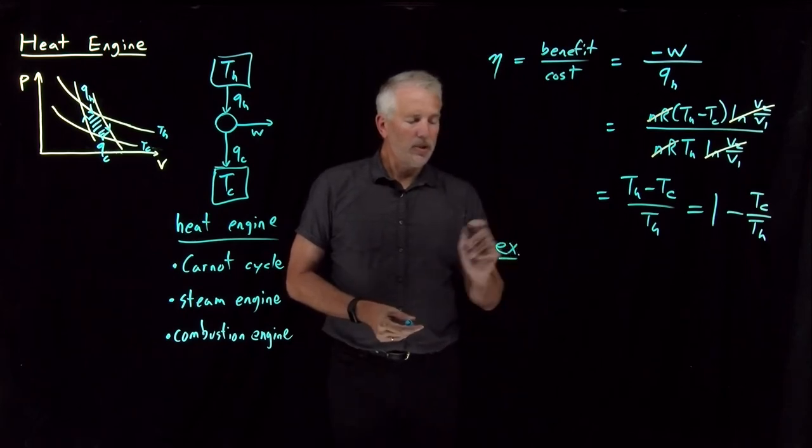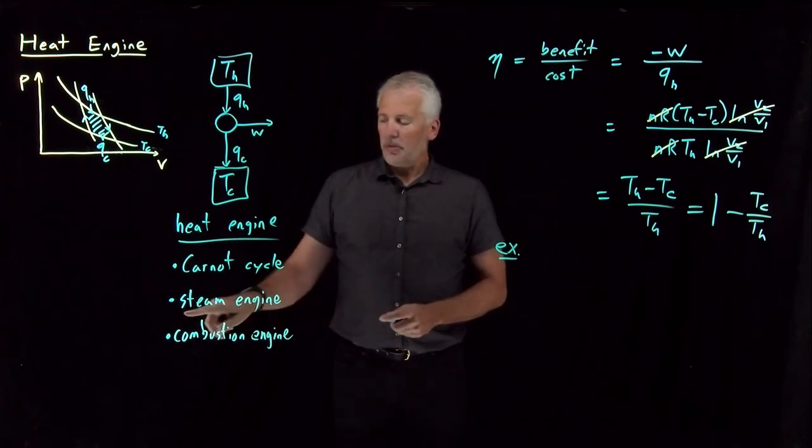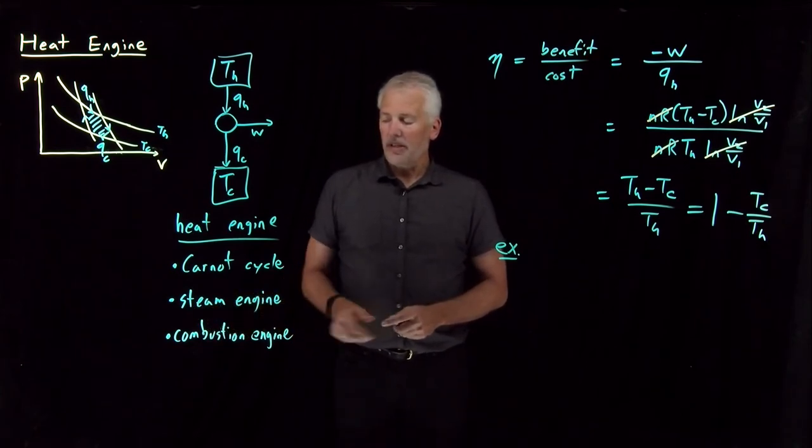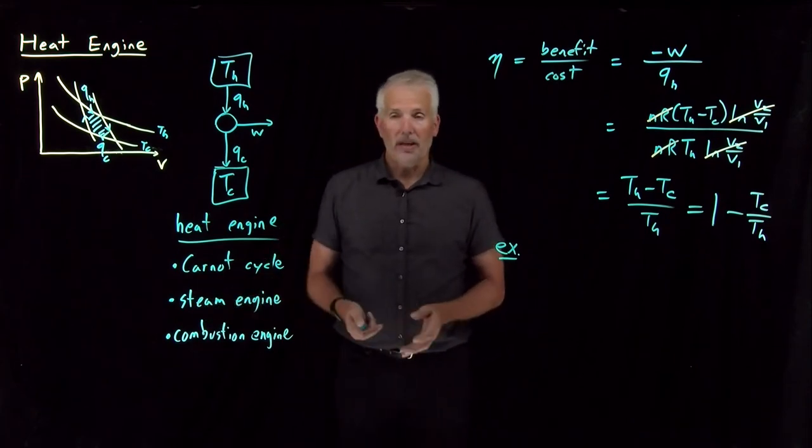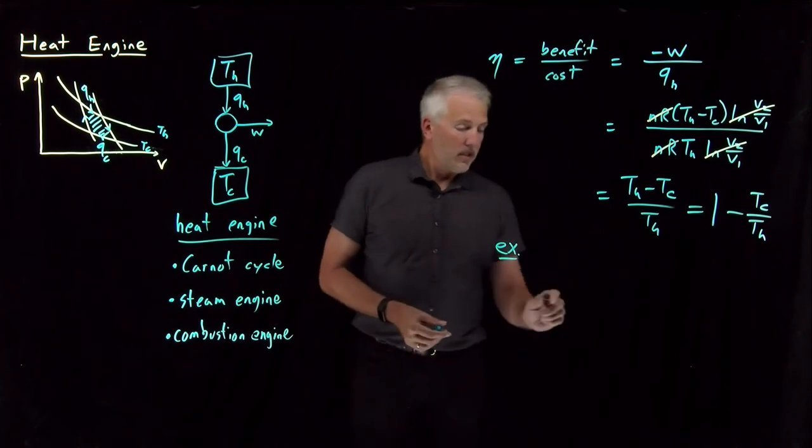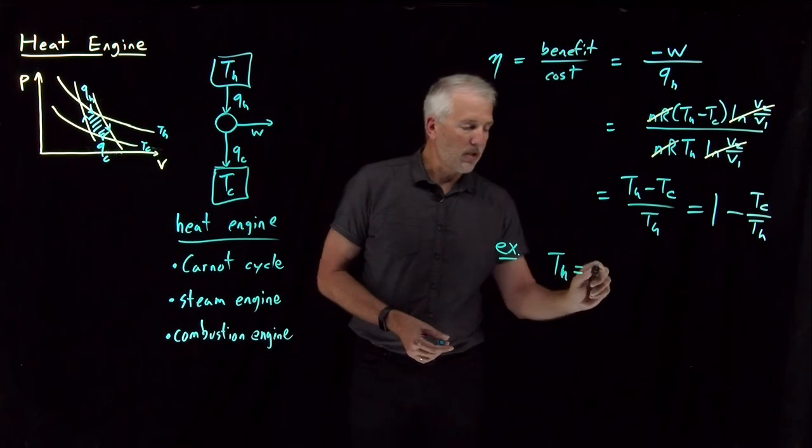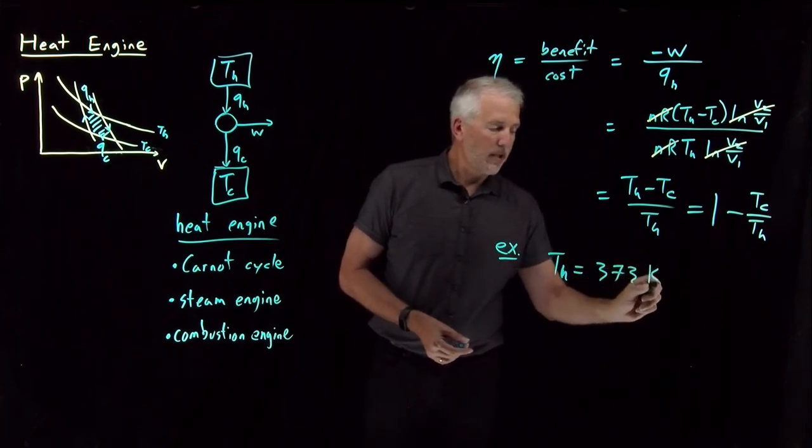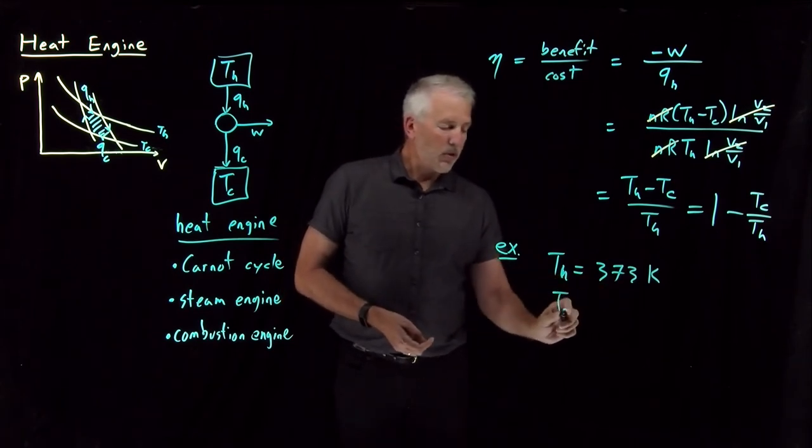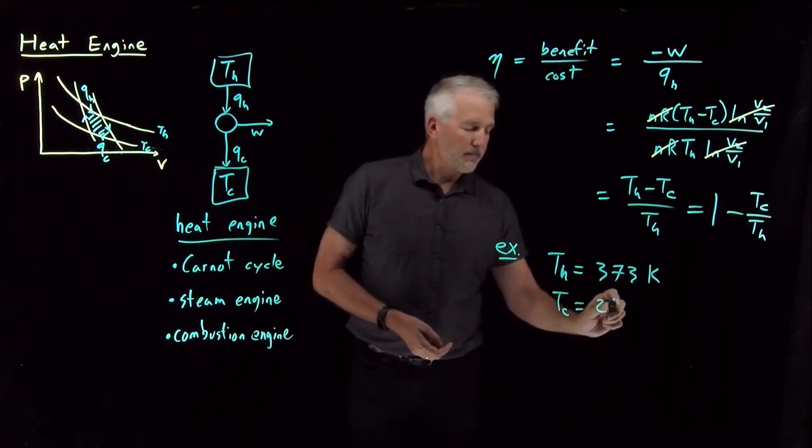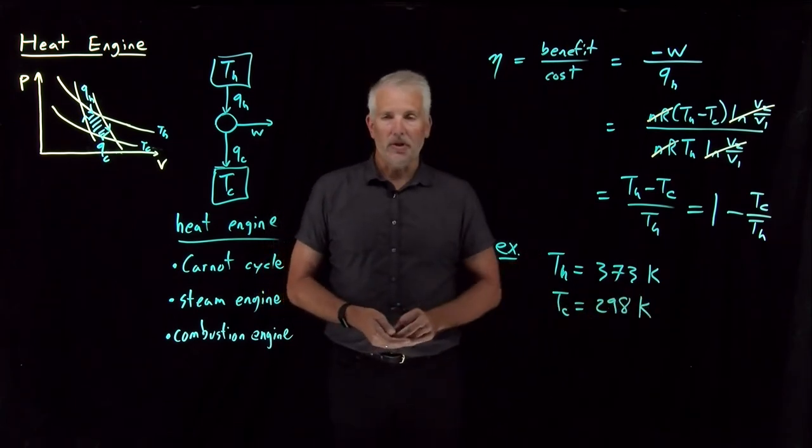That will make a little more sense probably if we use a specific example. So let's say, just because the numbers are fairly easy, let's take the case of a steam engine. Let's say we're running a steam engine, so we're getting our work out of boiling water. So in a steam engine, the hot temperature is the temperature of boiling water, 100 degrees Celsius, or 373 Kelvin, if it's not a very high pressure boiler. So that's the hot temperature, and let's say we're running our steam engine at ordinary conditions where the environmental temperature is something like 298 Kelvin.